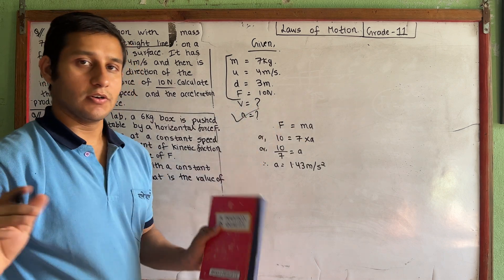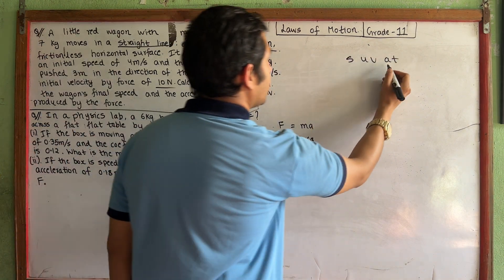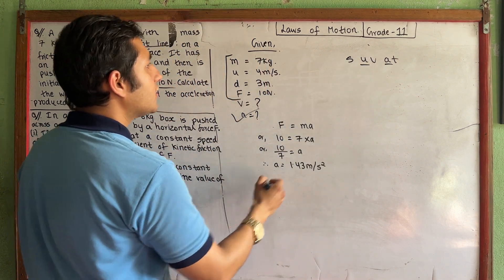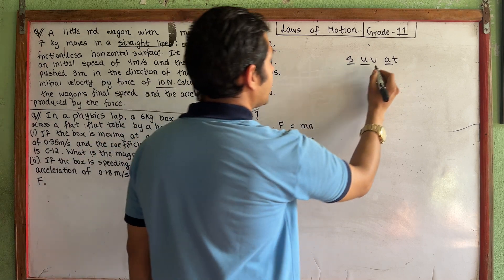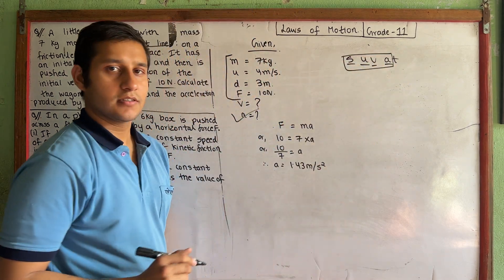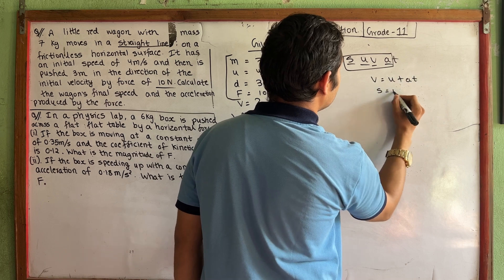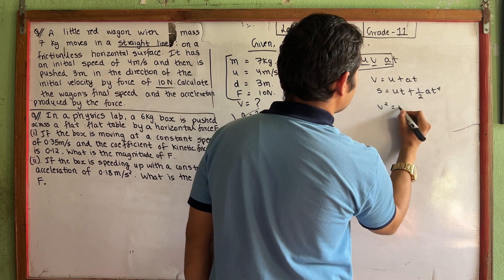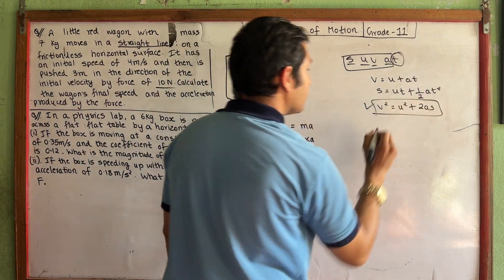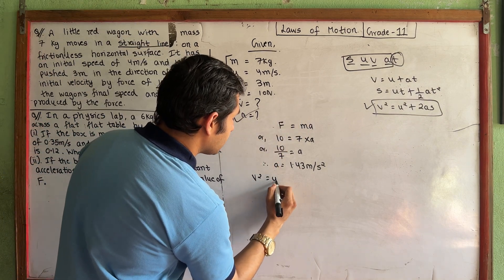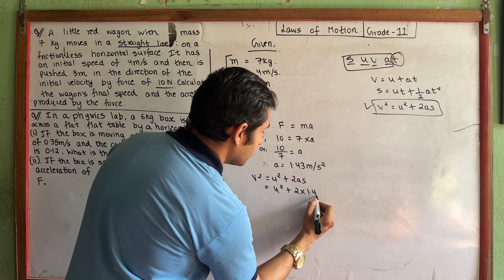Acceleration is 1.43 m/s². Now we write S, U, A, T. We use the equation v² = u² + 2AS. So v² equals 4 squared plus 2 into 1.43 into distance 3.